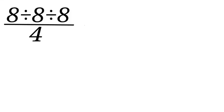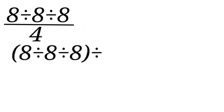8 divided by 8 divided by 8 all over 4 can also be rewritten like this: open bracket 8 divided by 8 divided by 8 close bracket divided by 4.